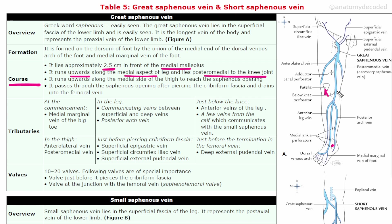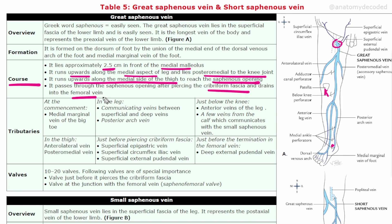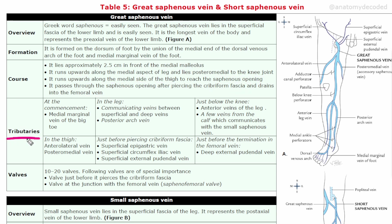It runs upwards along the medial side of the thigh to reach the saphenous opening. It pierces the cribriform fascia and drains into the femoral vein through the saphenous opening.